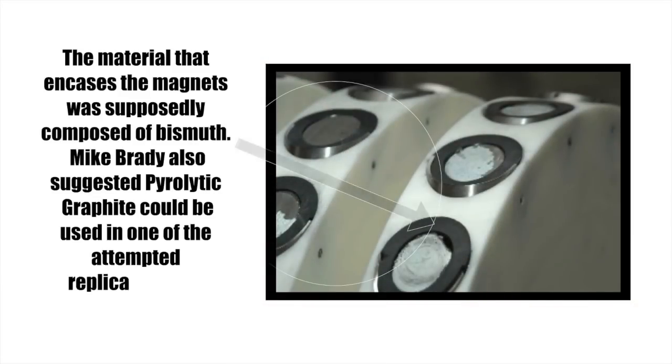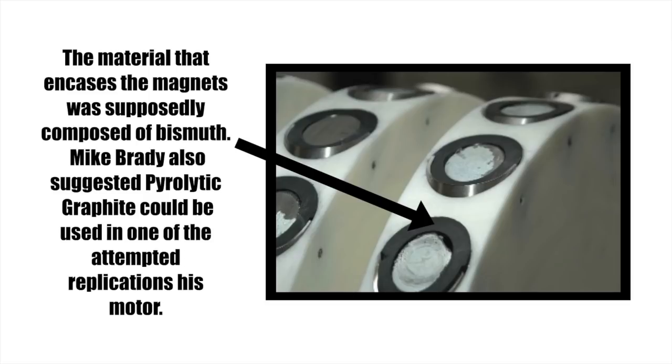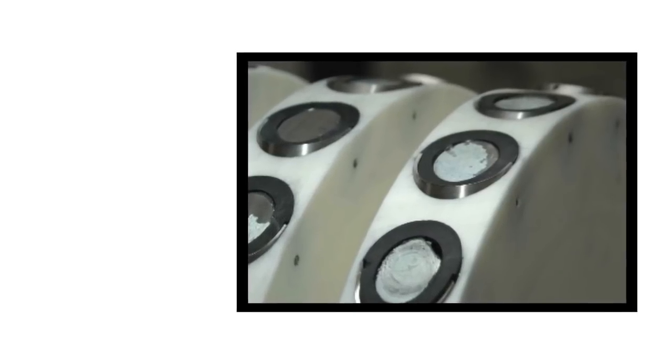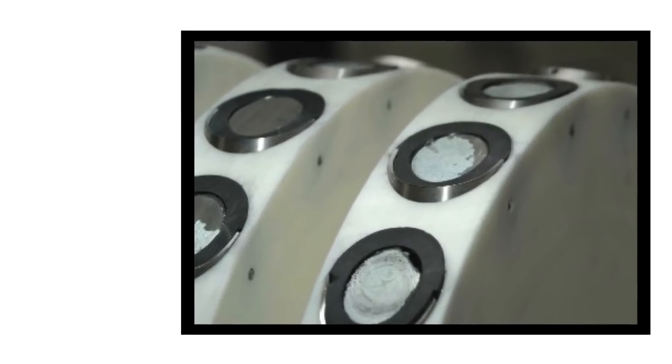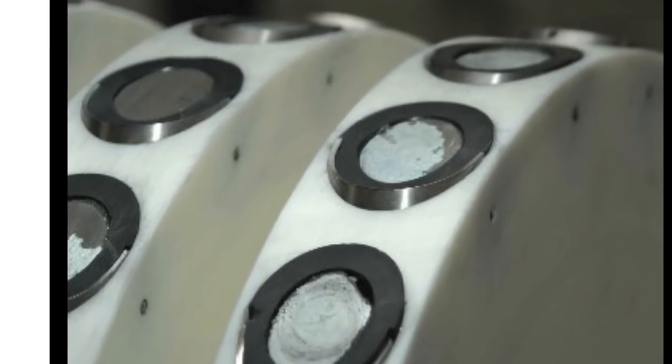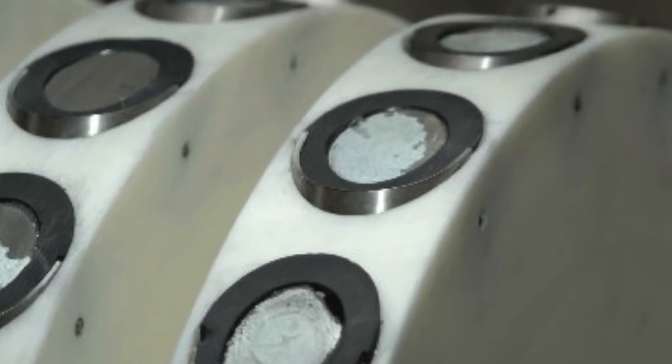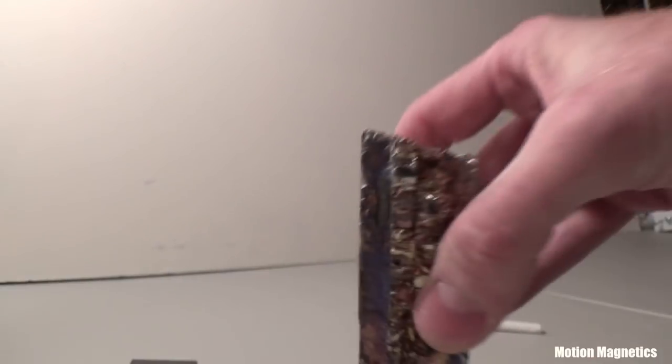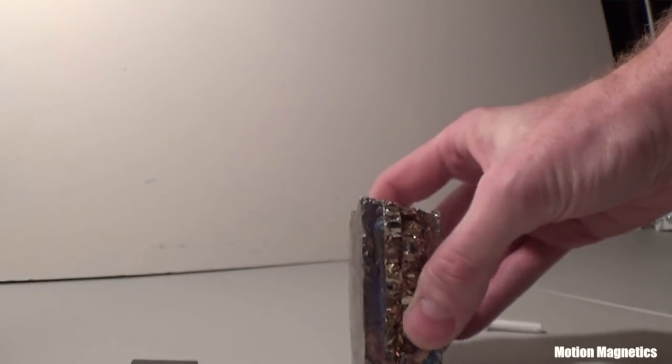The material that encases the magnets was supposedly composed of bismuth. Mike Brady also suggested pyrolytic graphite could be used in one of the attempted replications of his motor. According to Brady, this was done to focus the magnetic fields more tightly. This is due to the diamagnetic properties of bismuth and pyrolytic graphite. First of all, the material doesn't look anything like bismuth in the picture. This is a chunk of bismuth. The texture and color are completely different.